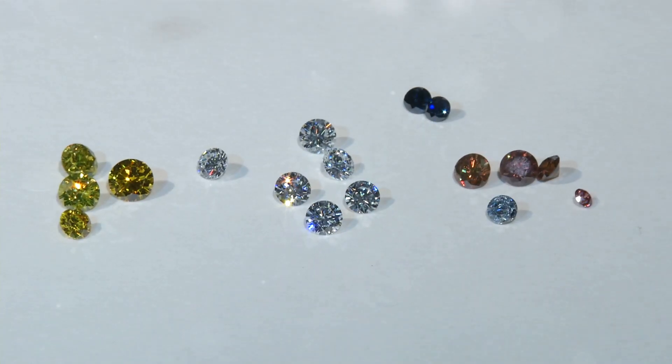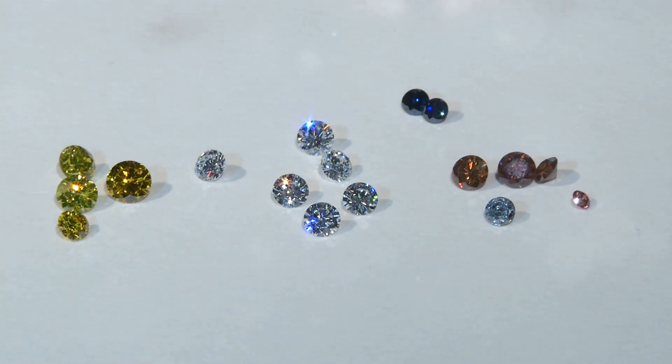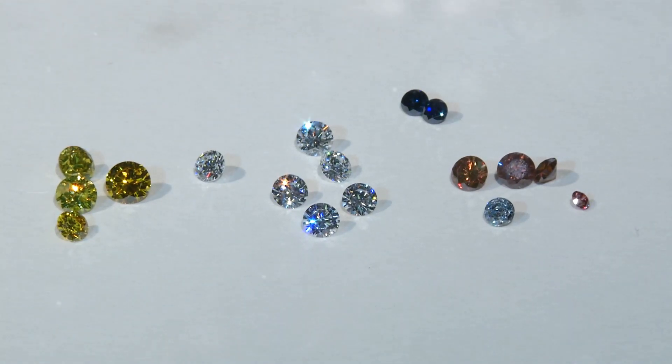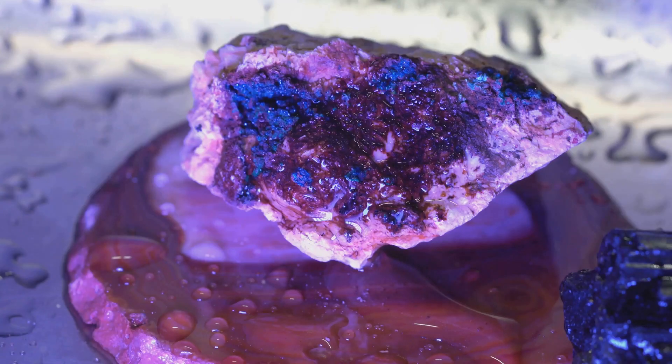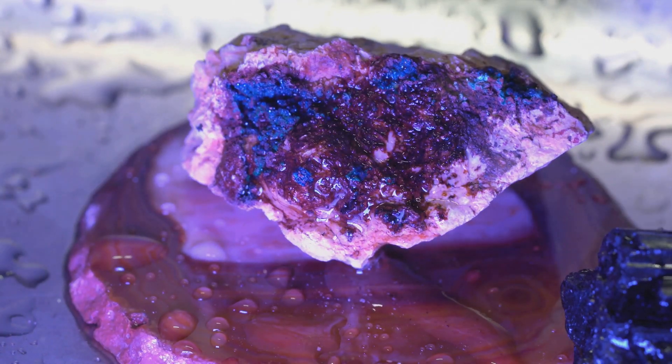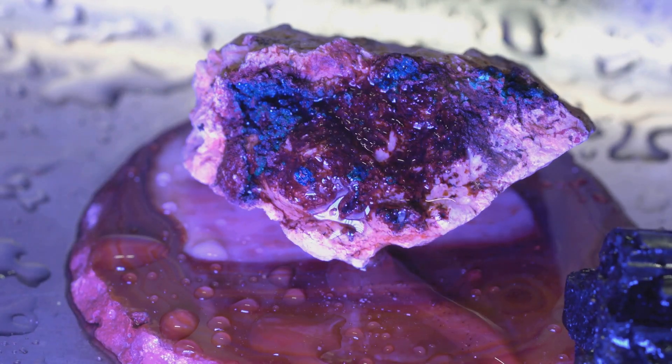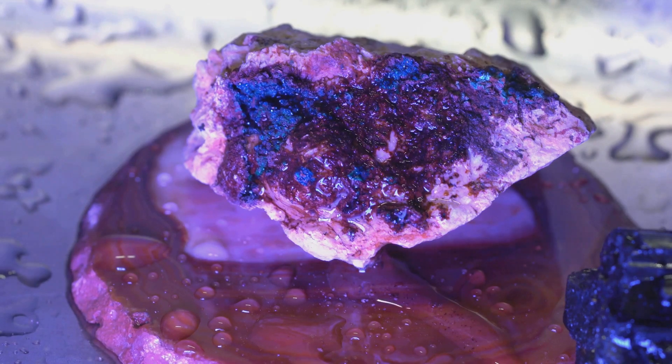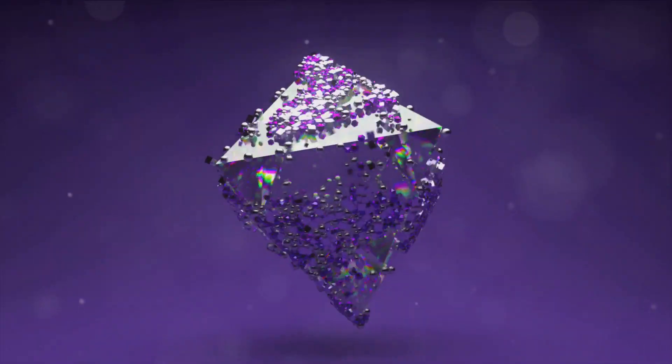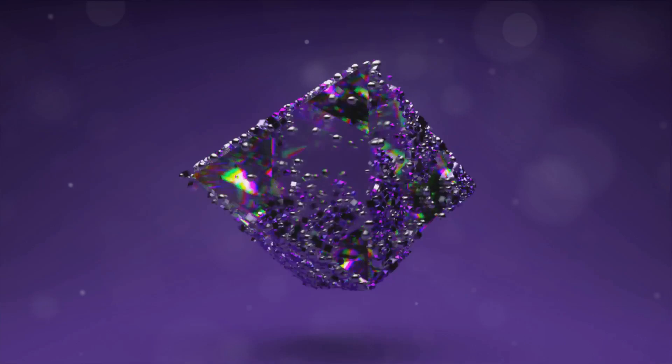In the heart of a lab, a process as old as the Earth itself is replicated with precision and control. The birth of a gemstone, a spectacle of nature, is now an achievement of human science. The process begins with a tiny seed crystal, a speck of the desired gemstone that serves as the template for what is to come. This seed crystal is placed in an environment rich with the mineral components of the gemstone. Think of it as the seed being planted in a nutrient-rich soil, ready to grow.